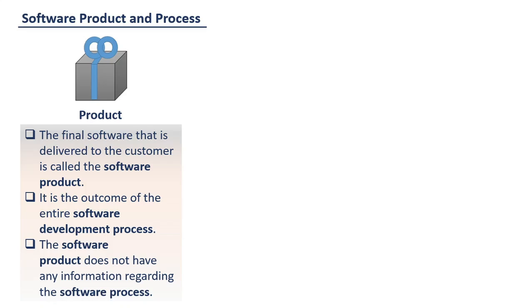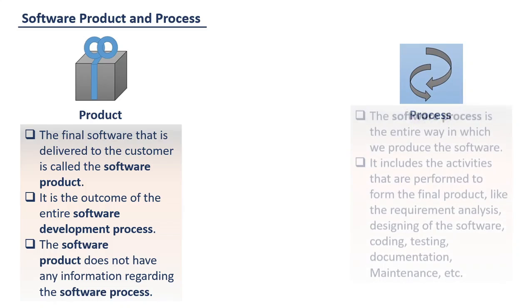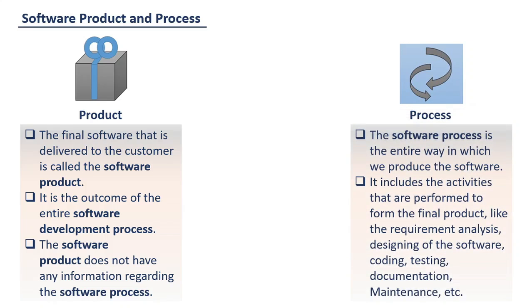Now, let us see what is the software process. The software process is the entire way in which we produce the software. It is the entire journey from the idea of the software to the final release of it.